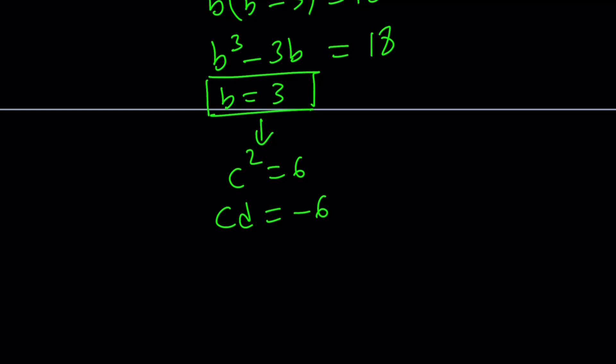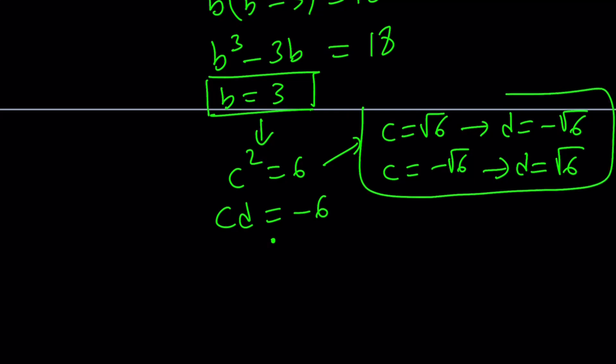Now if c is equal to square root of 6, then this implies d is equal to negative square root of 6 because their product is negative 6, as you can see here. And if c is equal to negative square root of 6, then d is going to become positive square root of 6. So basically they'll switch around and it doesn't matter which one I use. But I want to go with a positive c, so I want to use the first one.